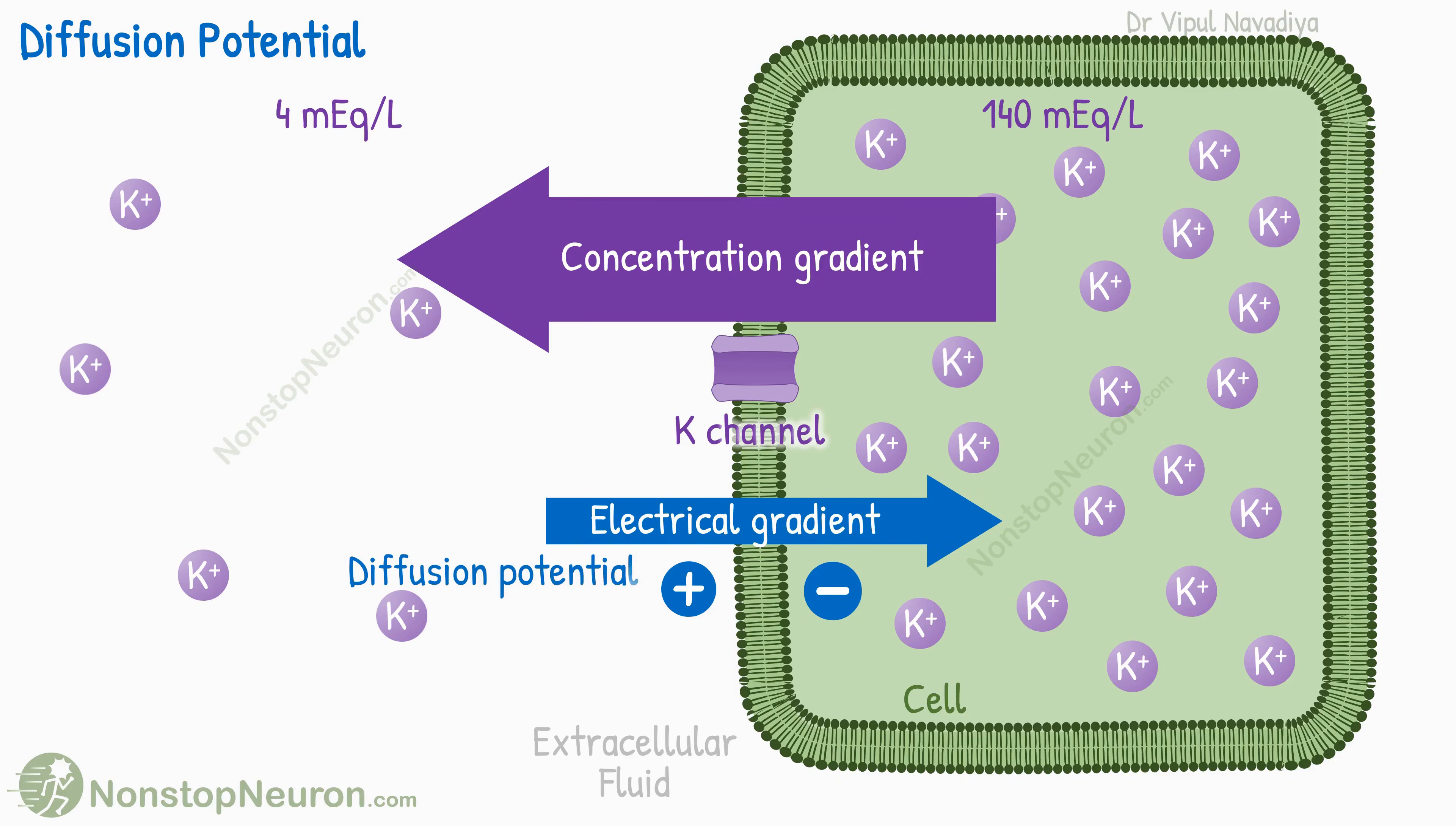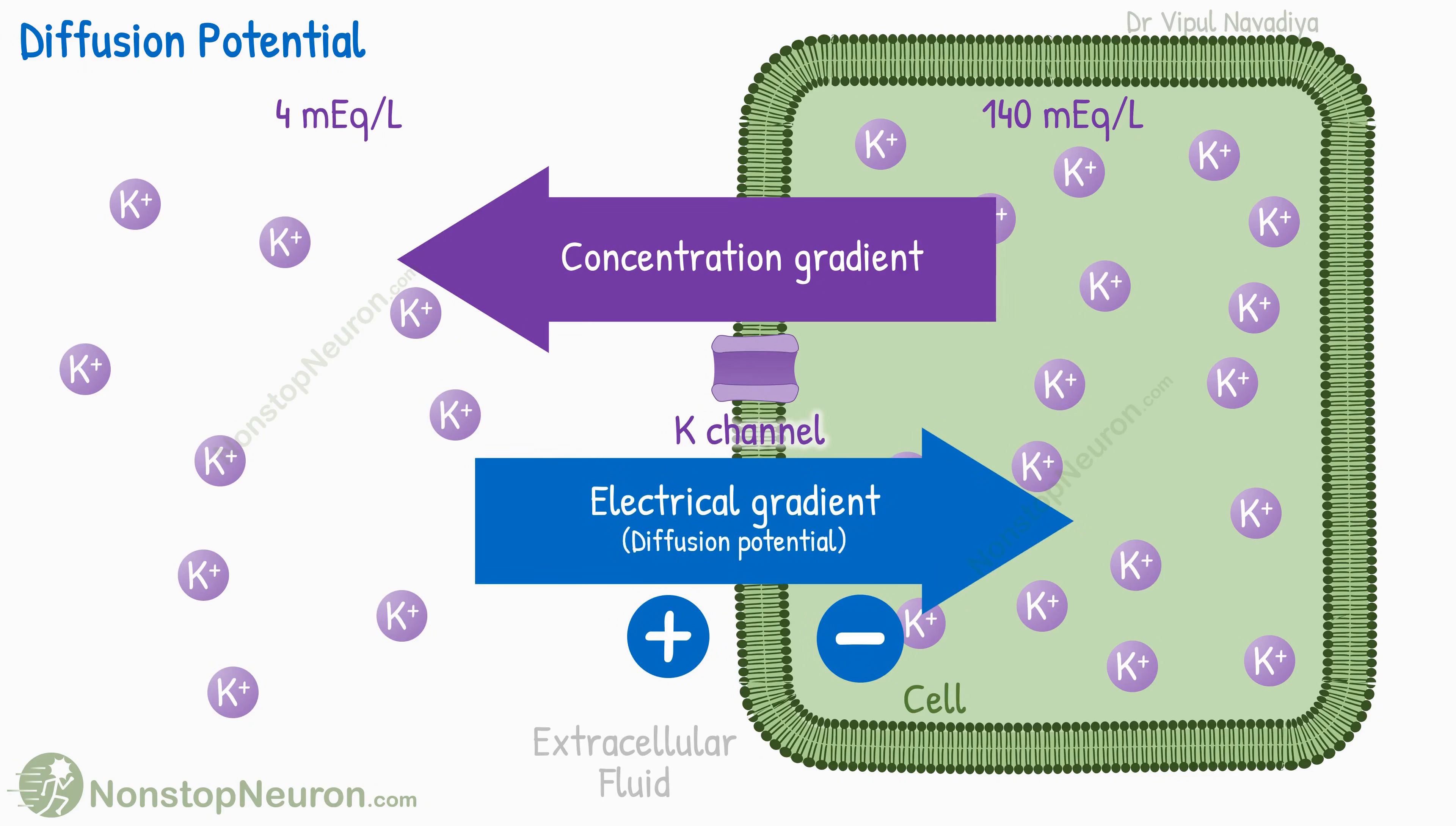This electrical gradient is called diffusion potential. As more and more potassium keep diffusing out, this potential gets stronger and stronger. Eventually, a point comes when this potential becomes strong enough to block the further exit of potassium despite the existing concentration gradient.